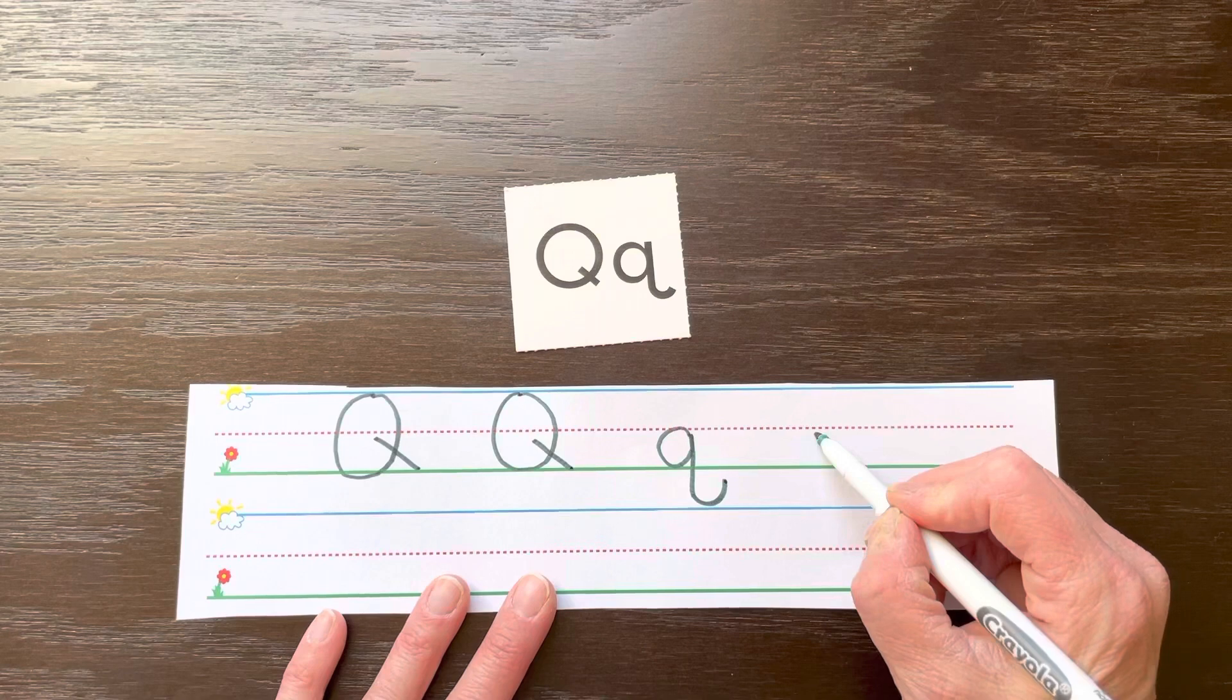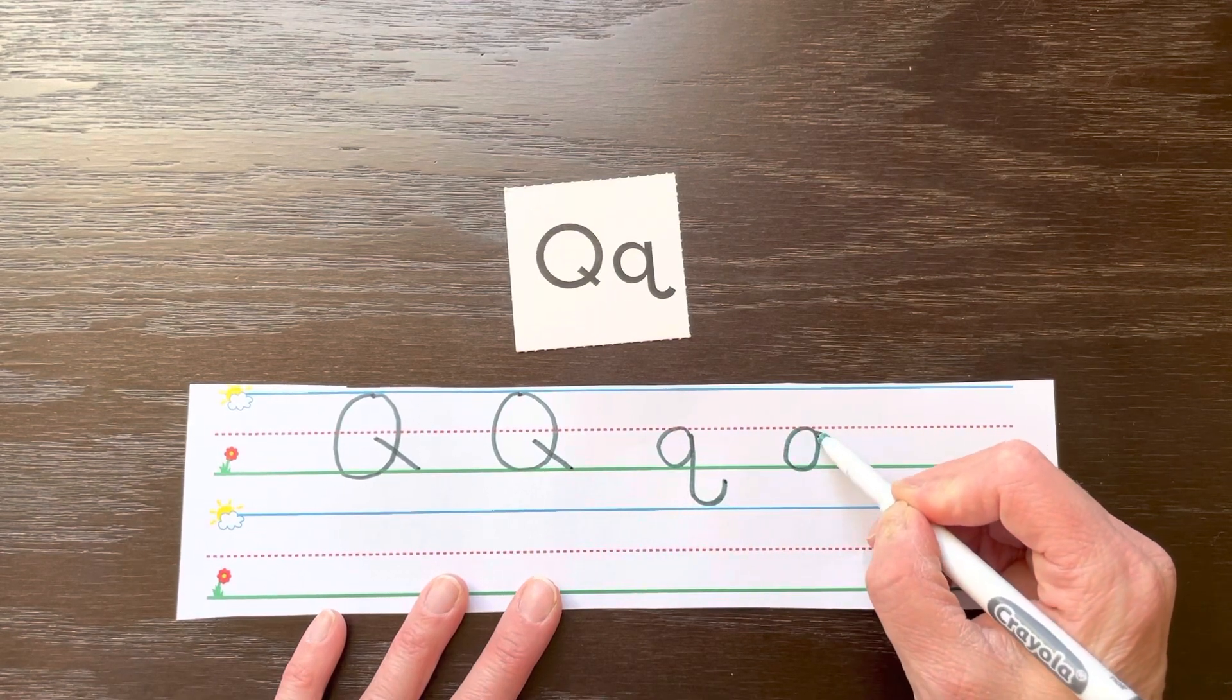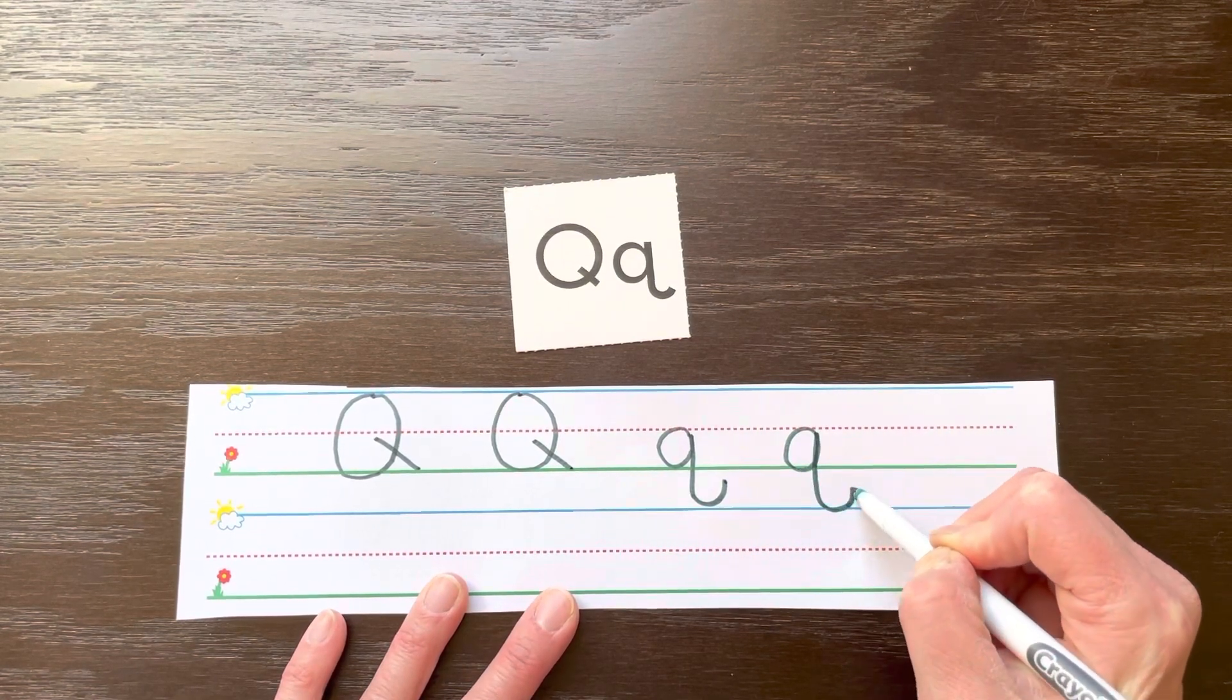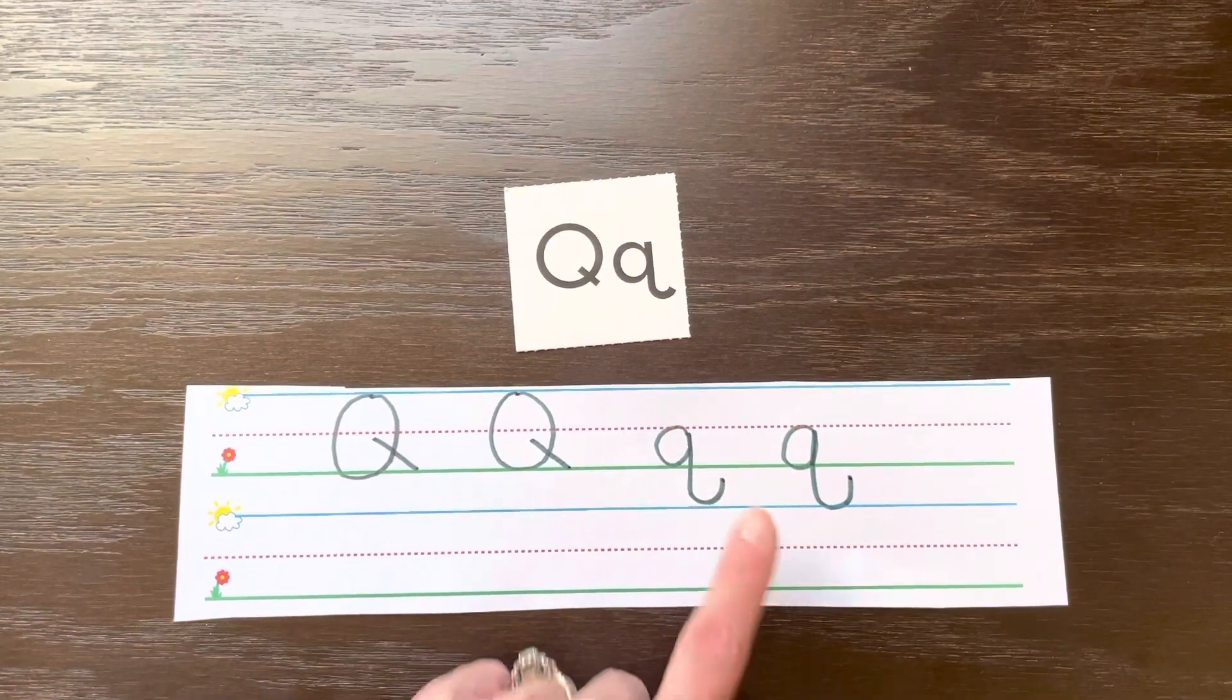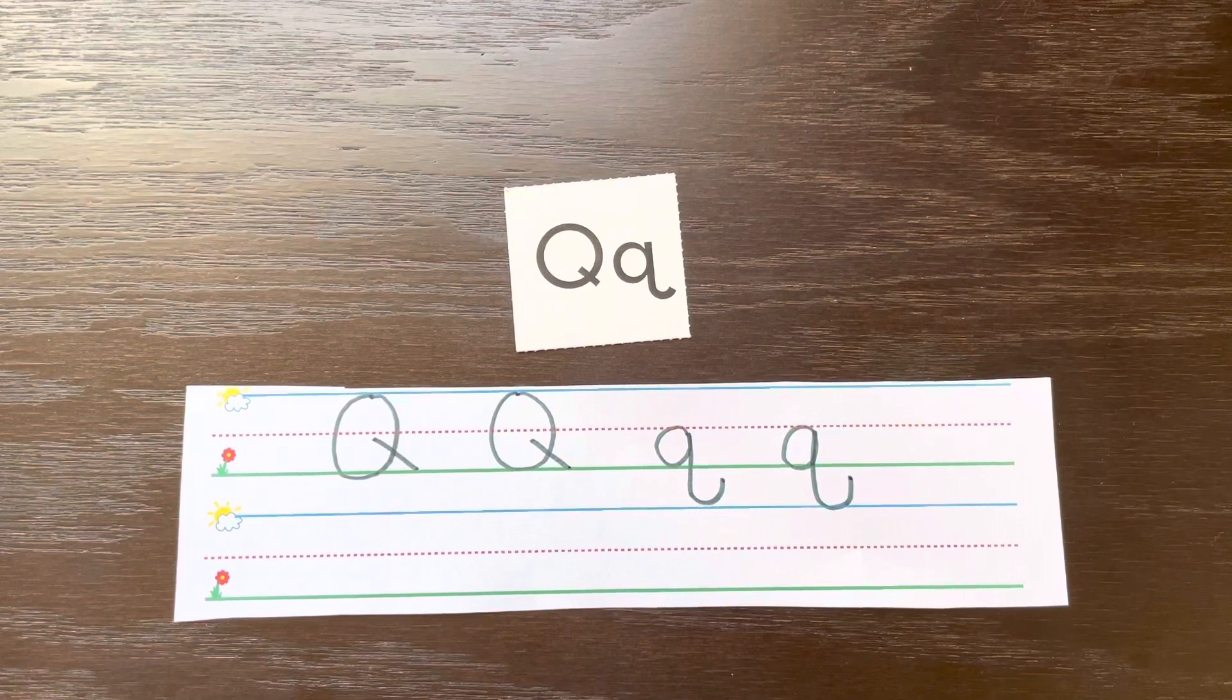One more time, we do a magic C, close it up, down in the ground and hook away from the letter. Capital Q and lowercase Q. Have a great day, little sprouts.